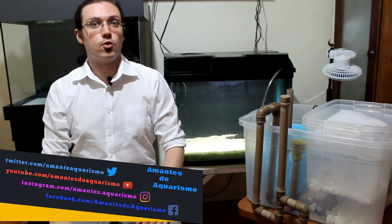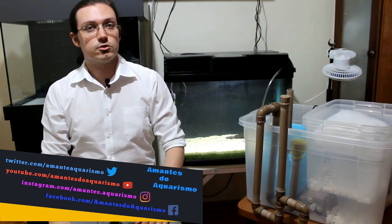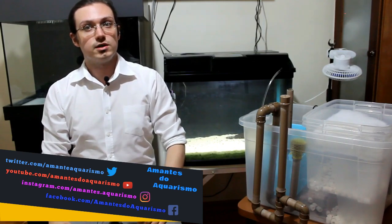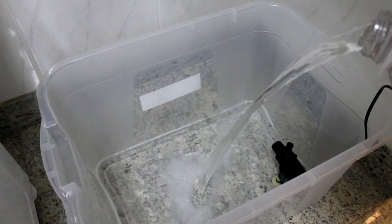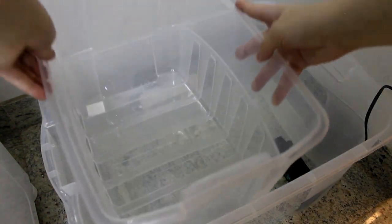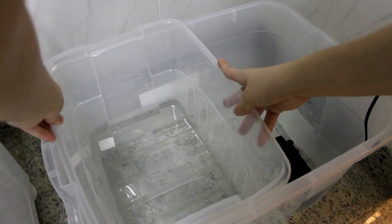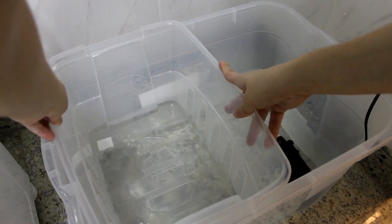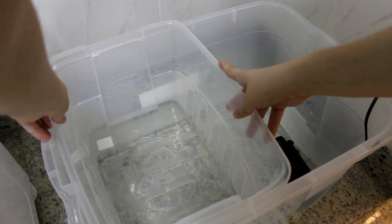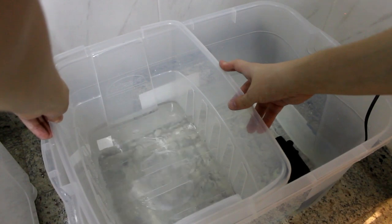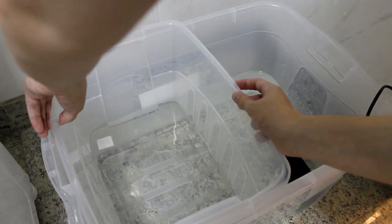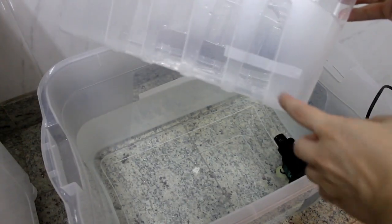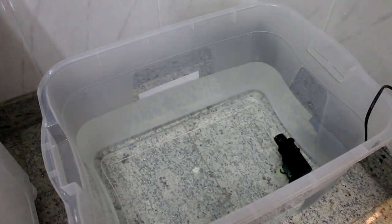Agora vocês devem colocar a bomba e a caixa média dentro do Samp. Após colocar os dois, encham de água o Samp até cobrir um pouco menos da metade da caixa média. Marquem a que altura da caixa média bateu a água para que posteriormente vocês saibam até que altura devem colocar as mídias. Todas as mídias devem ser colocadas até esse limite para o caso a energia caia, as mídias não fiquem sem água, pessoal.